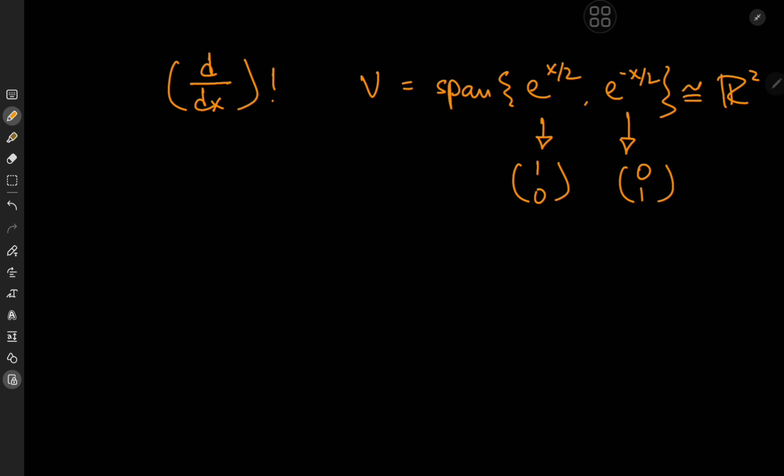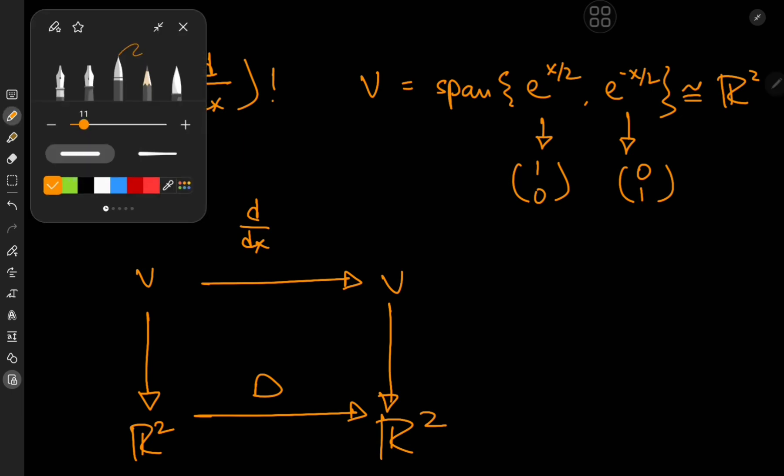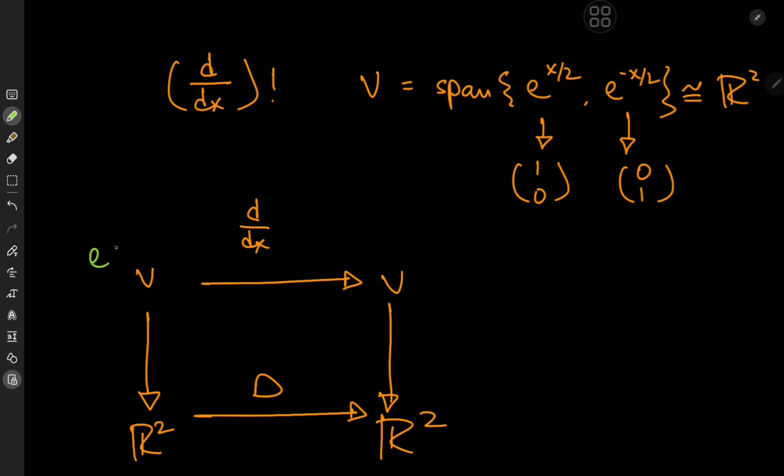Now to translate the operator into a matrix, note that the operator d by dx takes vectors in V onto vectors in V. And we know what these vectors look like in the space R2. So in the corresponding R2 space, we're looking for a matrix that takes vectors in R2 onto vectors in R2. To figure all of that out, all we need to know is what happens to the basis vectors. Let's talk about the basis vector e to the x by 2. This is 1 half of e to the x by 2 on differentiation with respect to x.